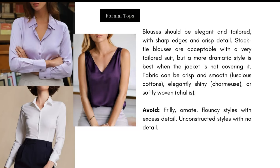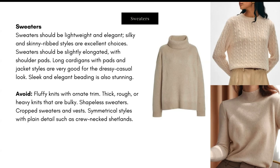Sweaters should be lightweight and elegant. Silky and skinny ribbed styles are excellent choices — they should be slightly elongated, and cardigans with pads and jacket styles are very good for a dressy-casual look. Some ribbed, some more sleek — the quality cannot be overstressed. Cashmere and very high quality wools are the best choice for this type. Avoid fluffy knits with ornate trim, thick or rough or heavy knits that are bulky, shapeless sweaters, cropped sweaters and vests, and symmetrical styles with plain detail such as crew-neck Shetlands.